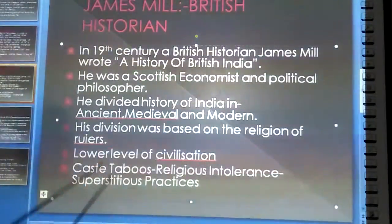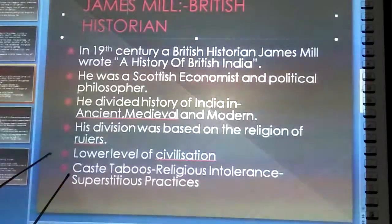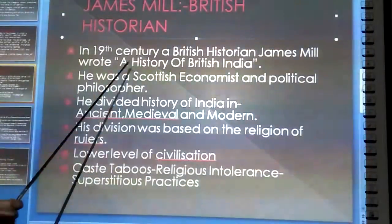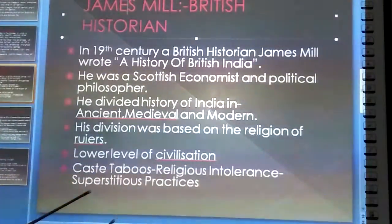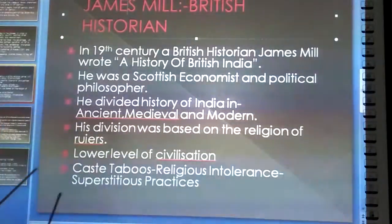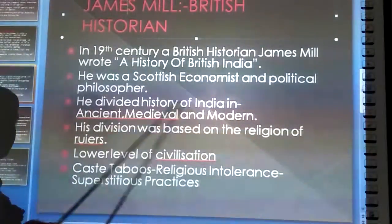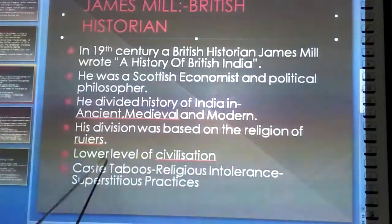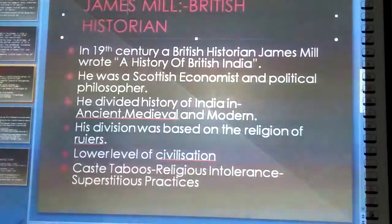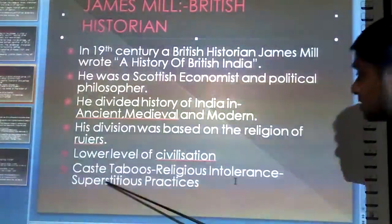To sum up this slide: James Mill was a British historian. In the 19th century, he wrote a book 'The History of British India' in the year 1817. He was a Scottish economist and political philosopher. He divided the history of India into ancient, medieval, and modern parts. His division was based on the religion of the rulers. He called Asian societies the lower level of civilization and viewed Indian society as full of caste taboos, religious intolerance, and superstitious practices.